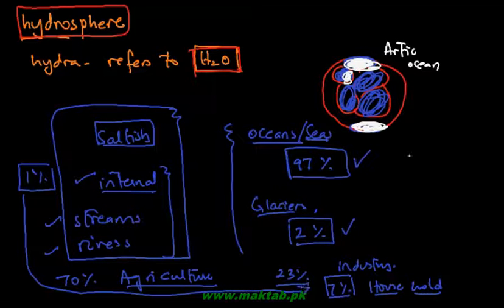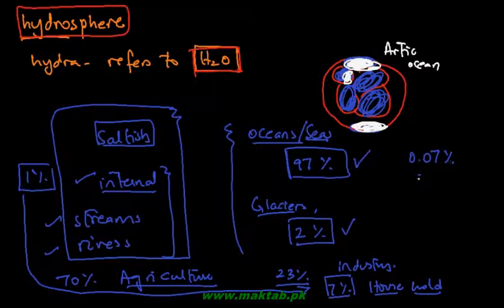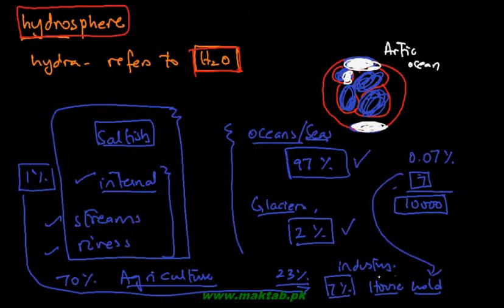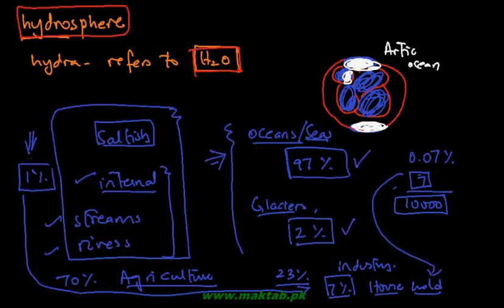So overall, the household water usage is just 0.07% - which means 7/10,000 - of all water on earth. If there are 10,000 kg of water in the world, only 7 kg is used for domestic/household purposes. About 99% of total water is not usable at all, and of the 1% that is usable, this is its distribution. This is all about the hydrosphere.